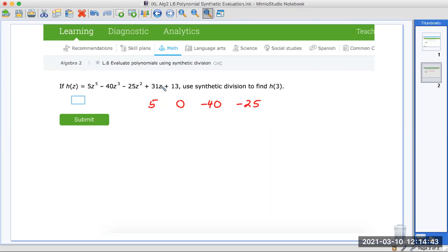Then comes the power of 1. That's really power of 1, 31. And the last number is called a constant. Make sure you add a 0 if there is no last number. Then you put your box.